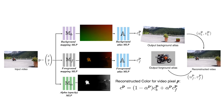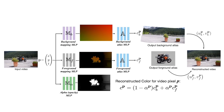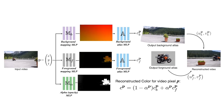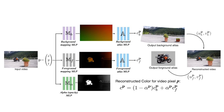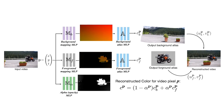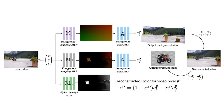Mappings, atlases, and alphas are all represented by coordinate-based MLPs, which allows the system to be trained with a simple reconstruction loss. We also introduced several regularization losses to improve convergence. Please see the paper for details.